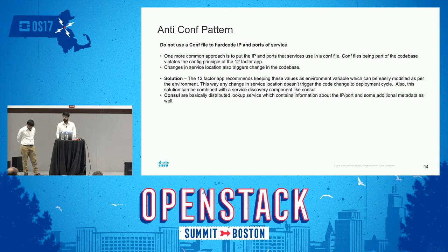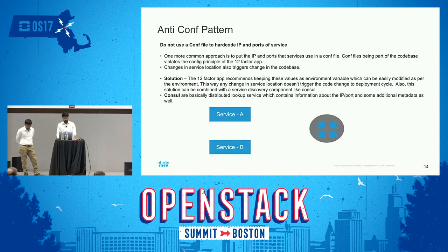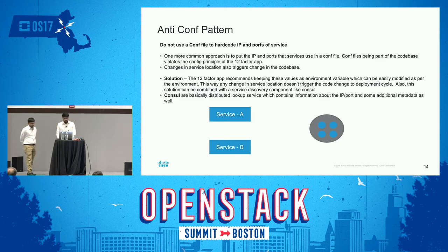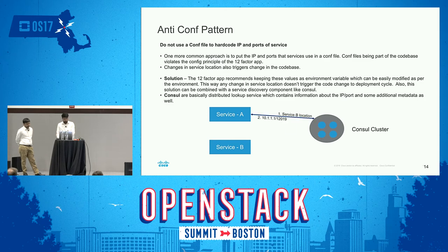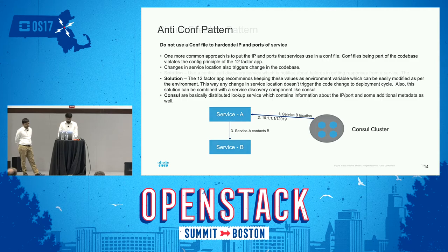The solution couples two things. First is environment variables — most configuration runs as runtime environment variables. For example, Service A wants to talk to Service B but doesn't know how to reach it. One option is an environment variable exposing Service B's IP and port. The other is a central discovery service like Consul — a distributed lookup service containing IP, port, and metadata. The Consul information can be exposed as an environment variable, and Service A queries the Consul cluster to learn Service B's location. Consul replies with the IP, port, and metadata, then Service A talks directly to Service B.